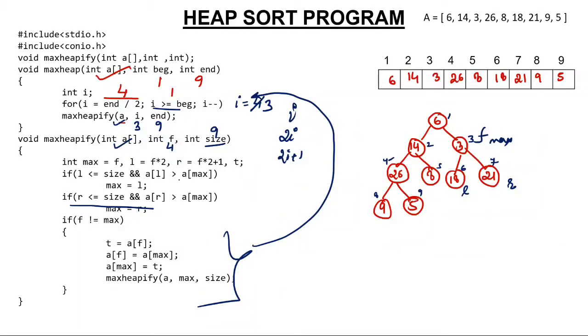Again I will see L is less than size. Yes, L is 6, 6 is less than size. Is A L greater than A max? Yes, it's greater than A max. So max will become L. This will become max now. I will again compare R with size. R is less than size. Yes, R is 7. Is A R greater than A max? Yes. Is this greater than this? Yes. So max will become R. This will become max, which I have already explained.